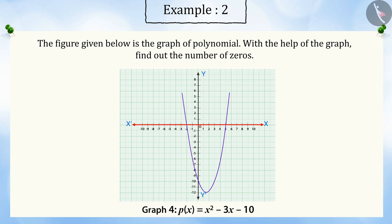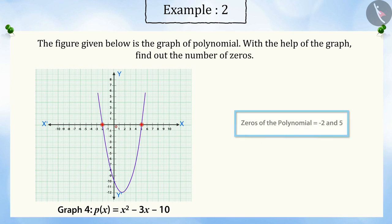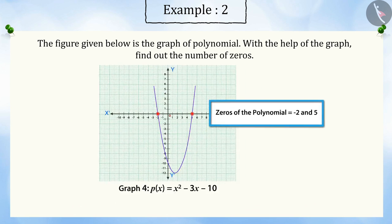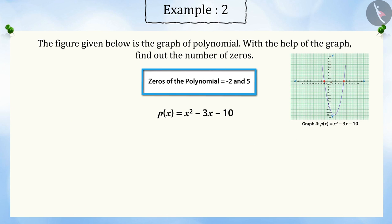Here, the graph intersects the x-axis at two points. Hence, there will be two zeros of this polynomial: minus 2 and 5. You can verify the result by replacing the zeros in the polynomial.